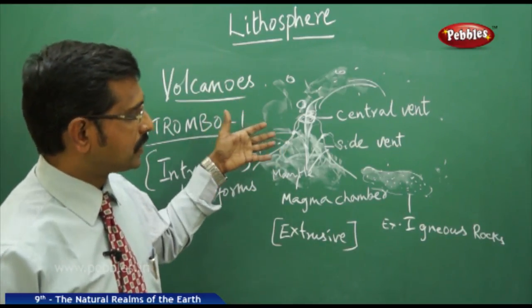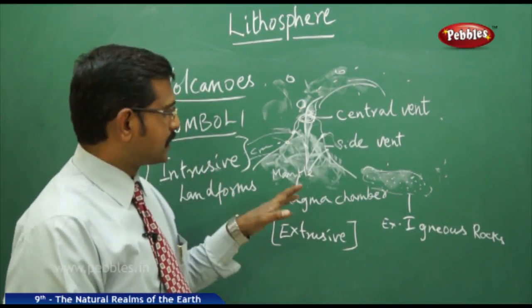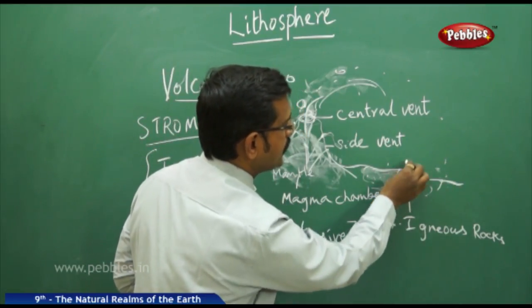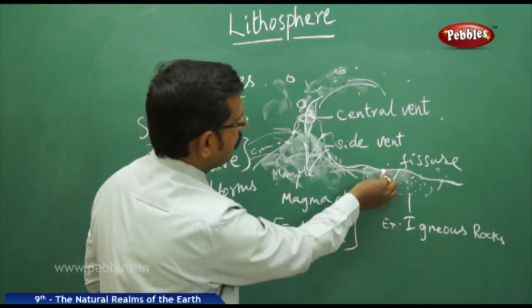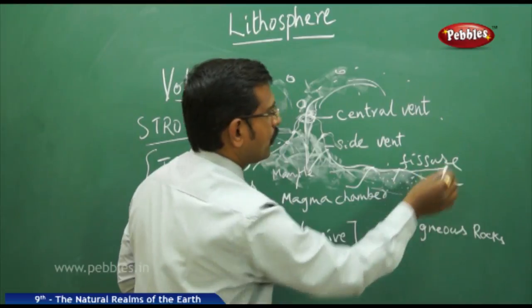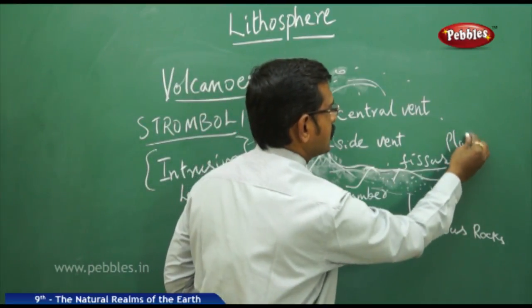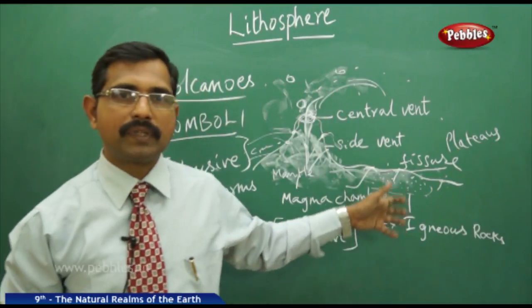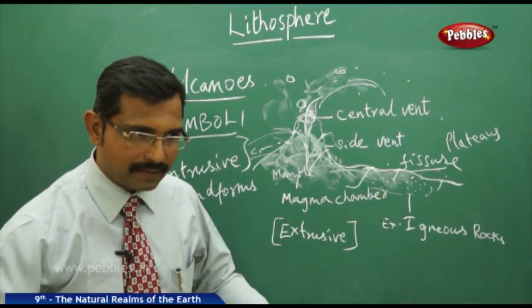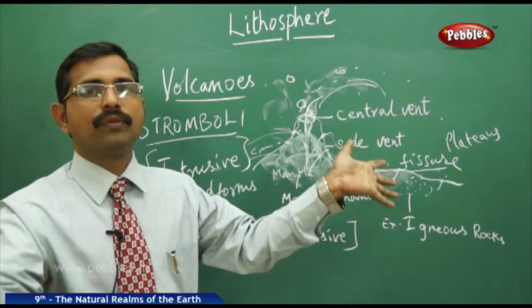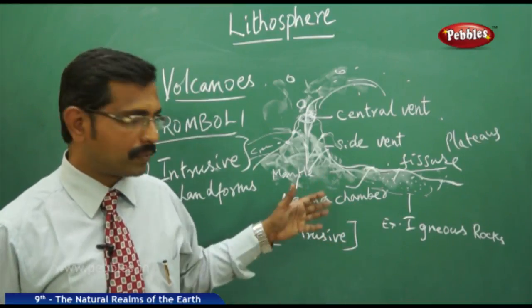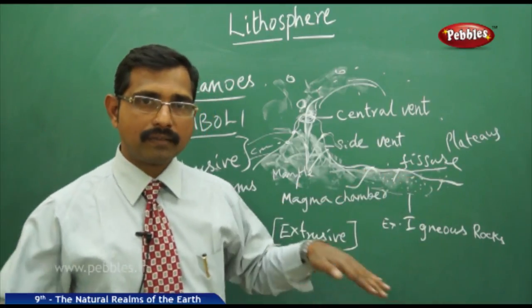Sometimes the magma chamber finds weakened areas of the Earth's crust called fissures and comes out through them without a traditional volcanic structure. The Deccan Plateau — covering areas like Hyderabad and Andhra Pradesh — is a major example of this, formed when lava came out through fissures and small cracks in the Earth's crust, spreading across the region.